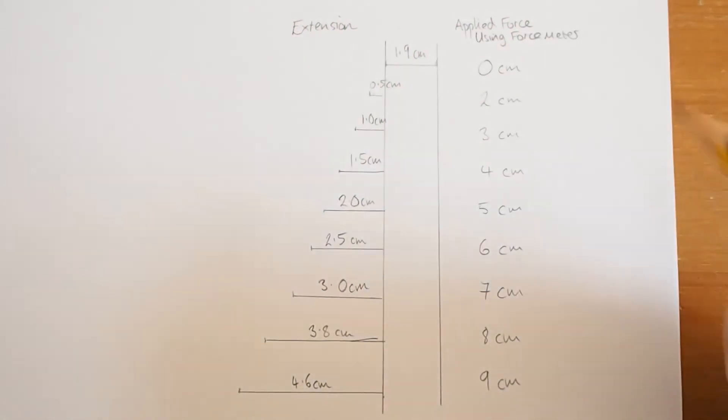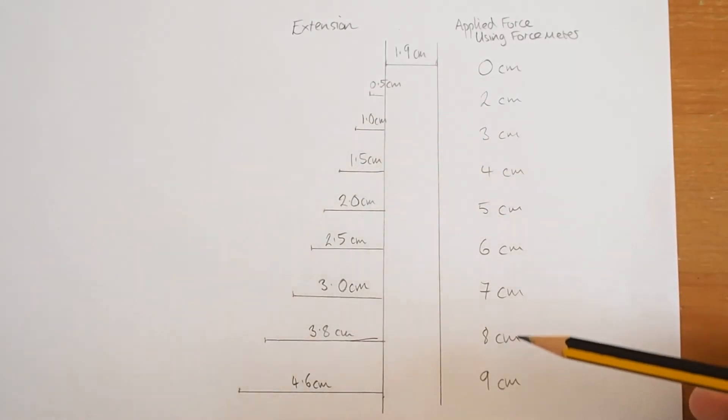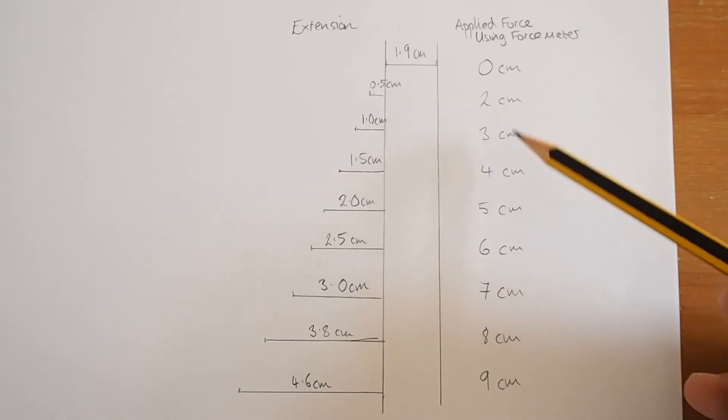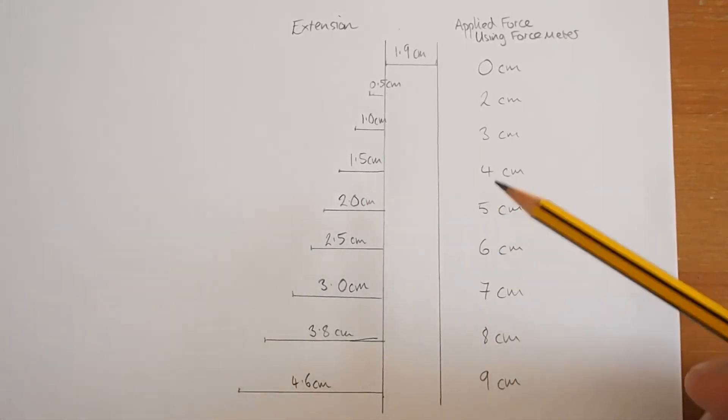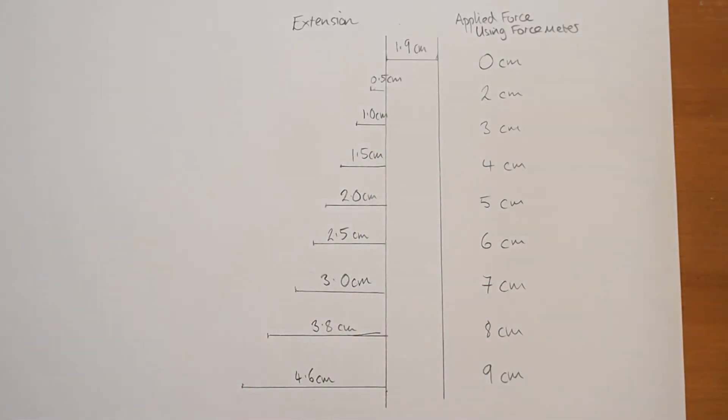Now, you can maybe see a problem here though, that these are not force values. So I'm going to have to turn these values into forces using our calibration curve for the force meter. So let me show you how we're going to process this data to see how a spring is influenced by applied forces.